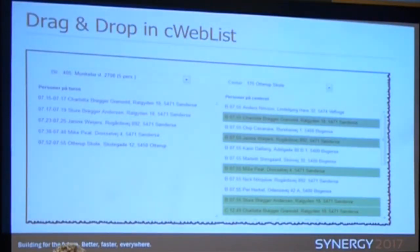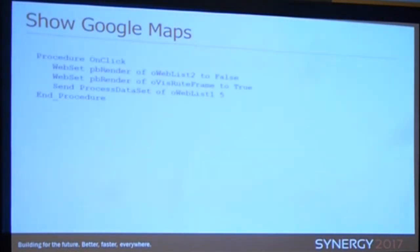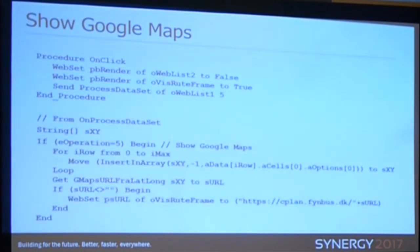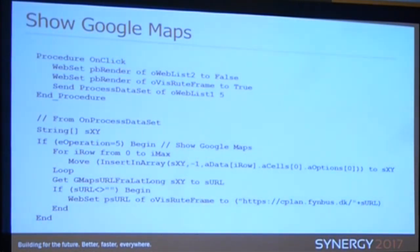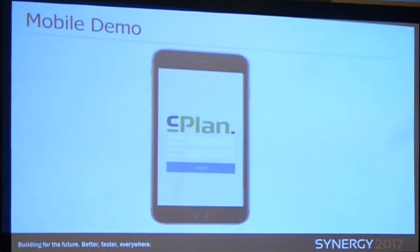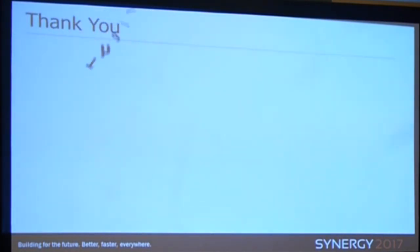To summarize: for Google Maps, I take operation five, call a function GetGMapsURL from latitude/longitude, and open the URL on the web front. The SMS module was also demonstrated, along with the driver app. That's pretty much what I was going to tell you.